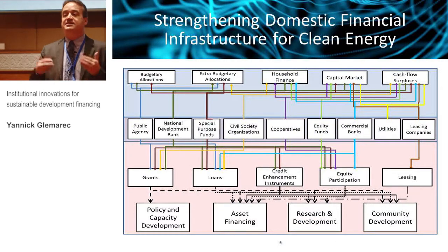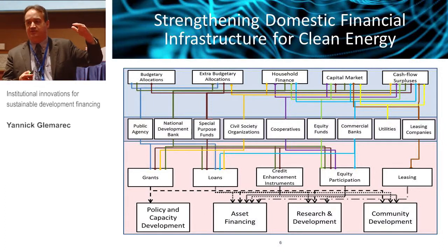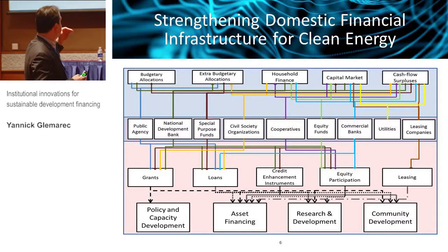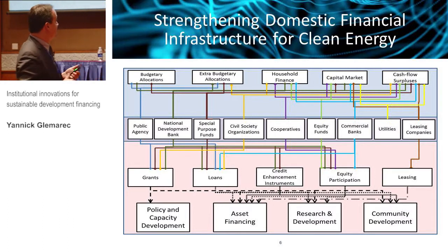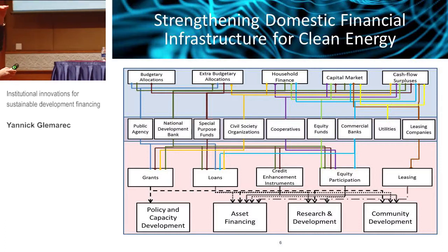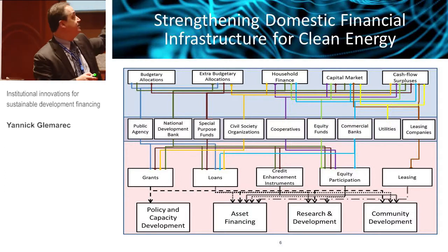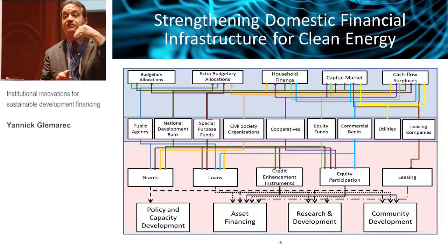So let's discuss what a national financial architecture for green energy looks like. You have a number of different institutions that can access different types of financial resources — public agencies, national development banks, commercial banks, power utilities, special purpose funds, equity funds, leasing companies. Each of these institutions plays a key role in terms of accessing different types of money: budgetary allocation, extra-budgetary, household finance, capital markets, operating surpluses, and in terms of the products they offer.